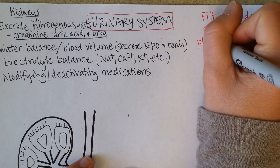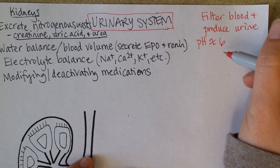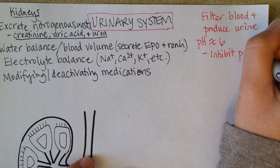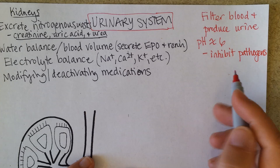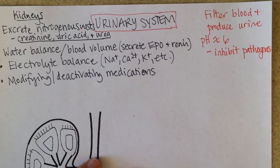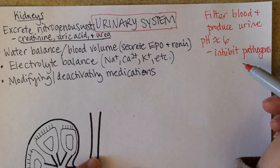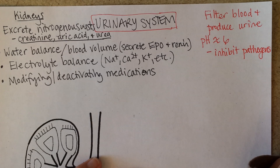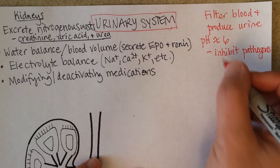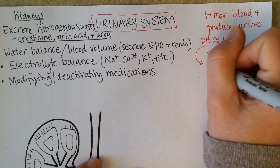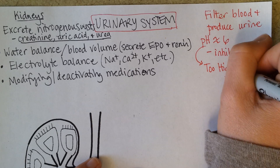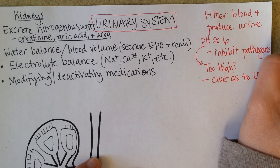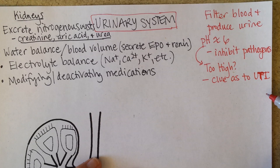The pH of urine is about 6, and this is acidic. That has a key role in inhibiting pathogens from growing in the urethra, since the urine is flushing through there several times a day. If you're not urinating very frequently, you're not having that flush of acidic urine come through, and pathogens are more likely to grow. So if the pH is too high, like maybe 7 or 8, this may be a clue that the patient has a UTI — a urinary tract infection.